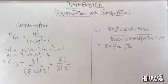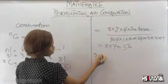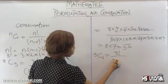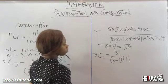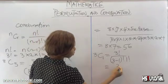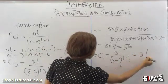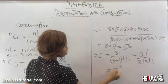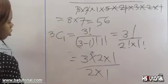Now let's take another simple example to drive home our points: 3 combination 1. This is simply 3 factorial all over (3 minus 1) factorial times 1 factorial, which equals 3 factorial over 2 factorial times 1 factorial. Expanding: 3 times 2 times 1, all over 2 times 1. The 2 times 1 cancels, leaving us with 3.